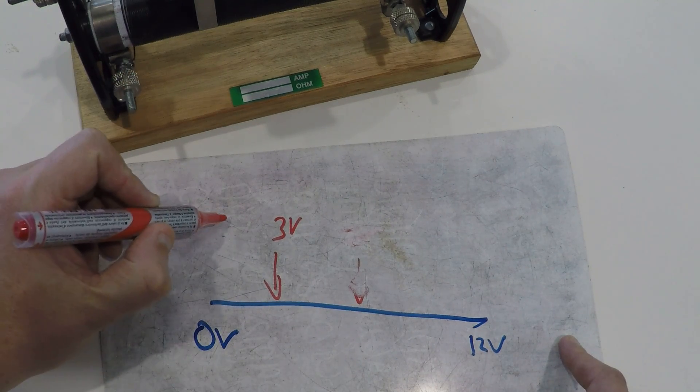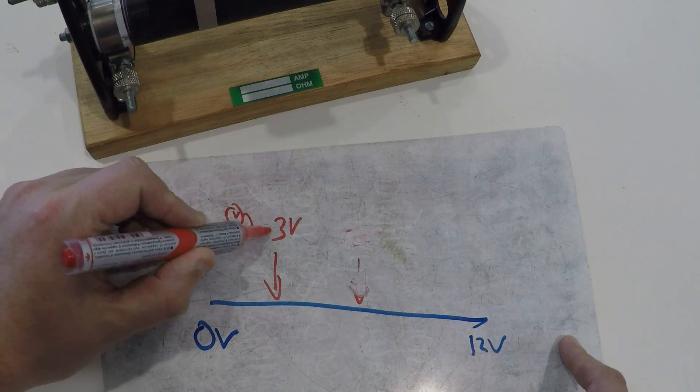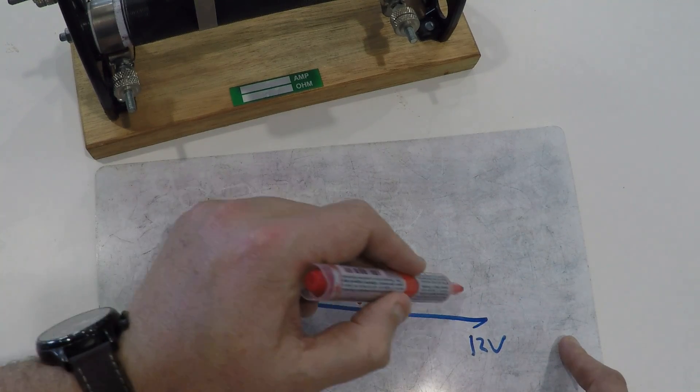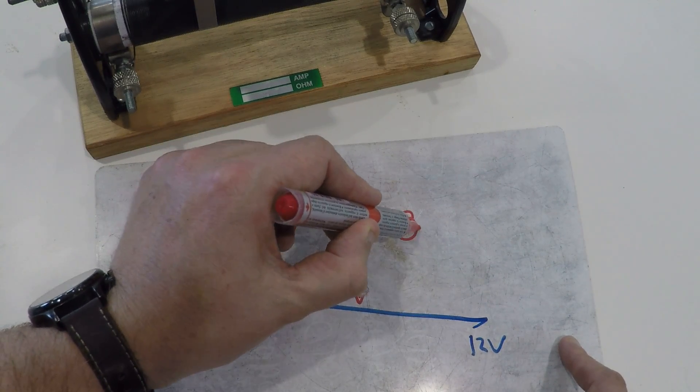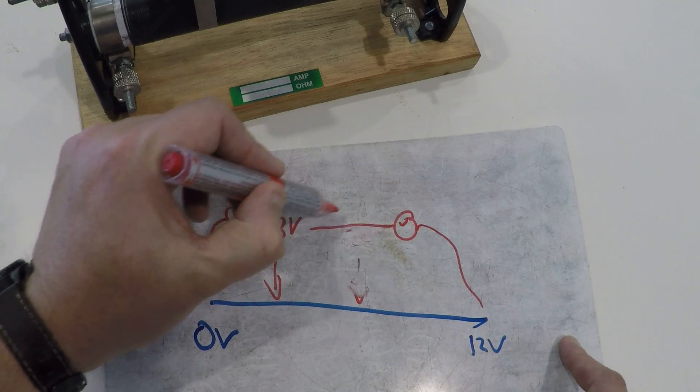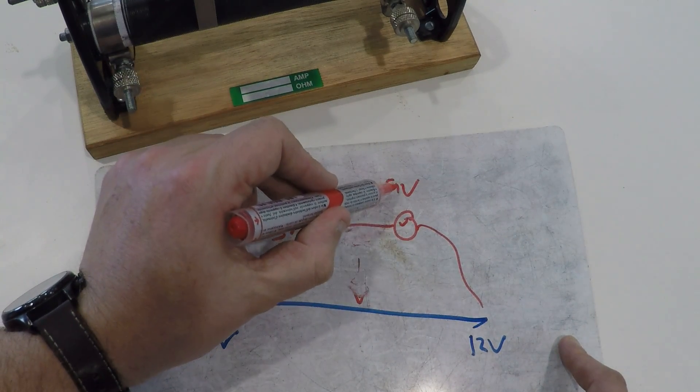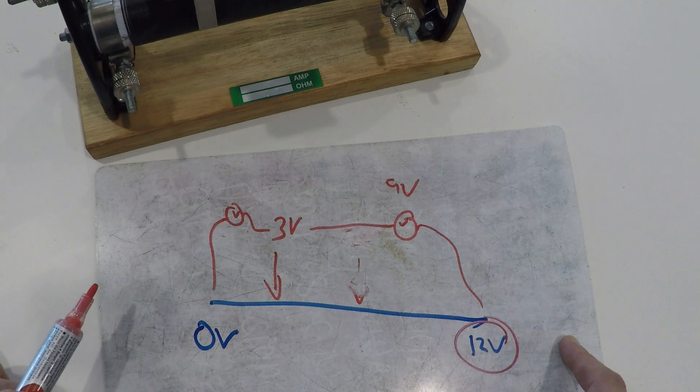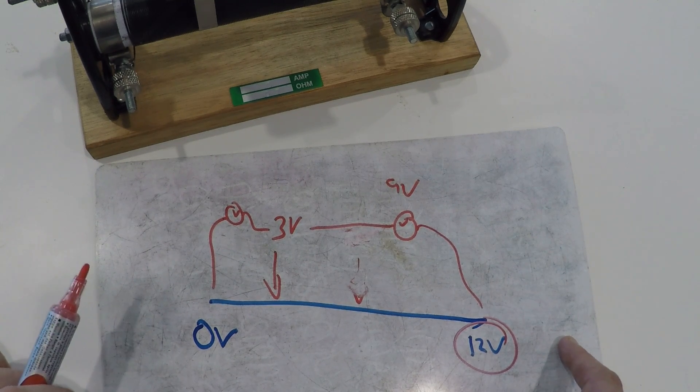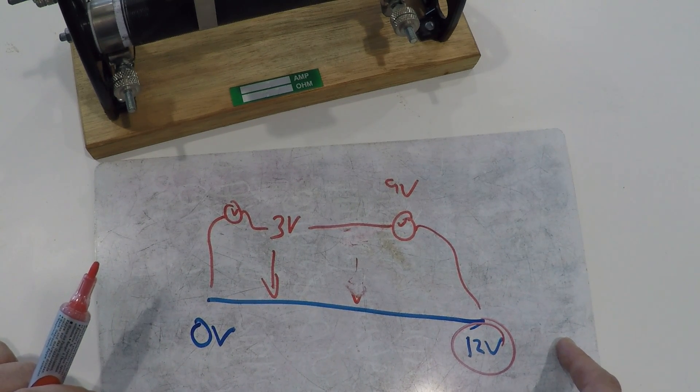Now what's interesting here, from here to here that would be a potential difference of three volts. So if I put my voltmeter here it would read three volts, but if I put my voltmeter from here to here it would actually read nine volts. And you think, well three volts plus nine volts is equal to 12 volts.